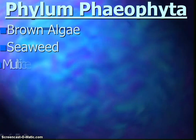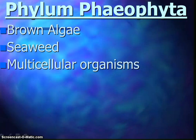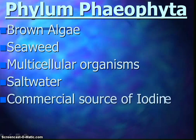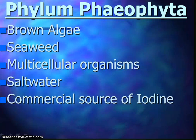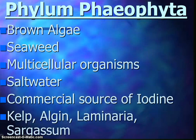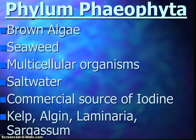The brown algae is the largest subphylum — this is the seaweed. They are very complex, multicellular organisms that live mainly in saltwater. They contain chlorophyll and a brown pigment, and their main commercial source is iodine, used to clean wounds and in surgery. Examples include kelp, which is a fertilizer or food for humans; algin, which thickens ice cream; laminaria, a root-like structure with leaf-like parts; and sargassum, which floats unattached at the surface in warmer water and covers much of the Atlantic Ocean and the Sargasso Sea.